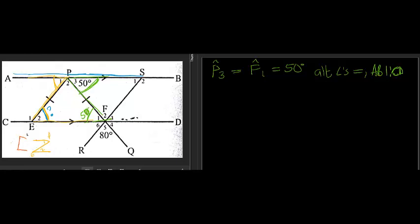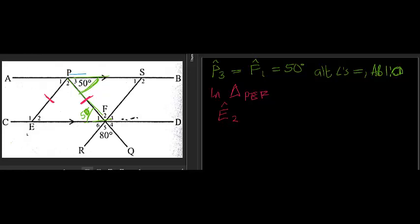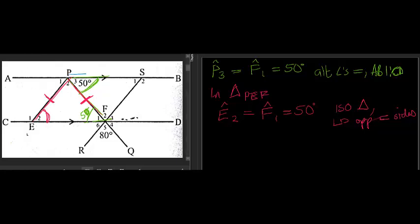Now I know F1 is 50 degrees. In triangle PEF, I can see these two sides are equal in length. Therefore angle E2 equals angle F1, which equals 50 degrees. The reason is it's an isosceles triangle — angles opposite equal sides are equal. So we have officially answered the question: E2 is equal to 50 degrees.